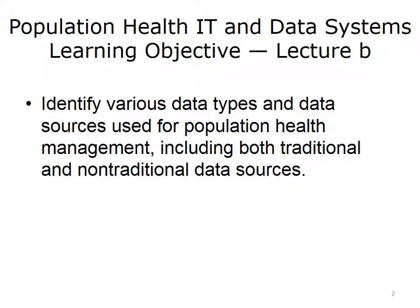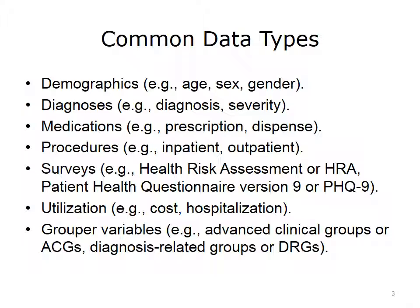This lecture continues the discussion of the common data types used for population health and focuses on diagnoses, medications, and procedures as the next set of data types commonly used in population health analytics. Common data types used for population health data systems and analytics include demographics information such as age, sex, and gender; diagnostic information such as the actual diagnosis and severity; medication information such as prescriptions, dispenses, and filled medications; and procedures such as medical evaluations, anesthetic procedures, surgeries, medical imaging, and other procedures in inpatient and outpatient settings.